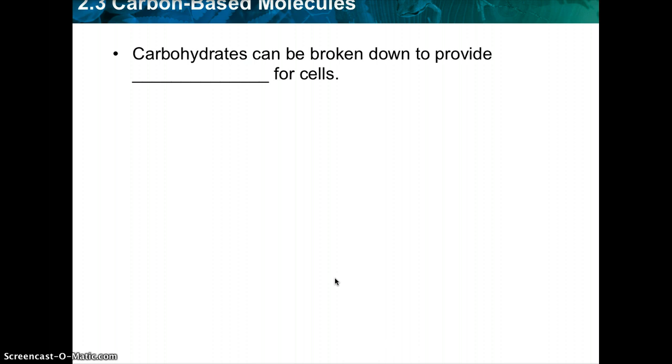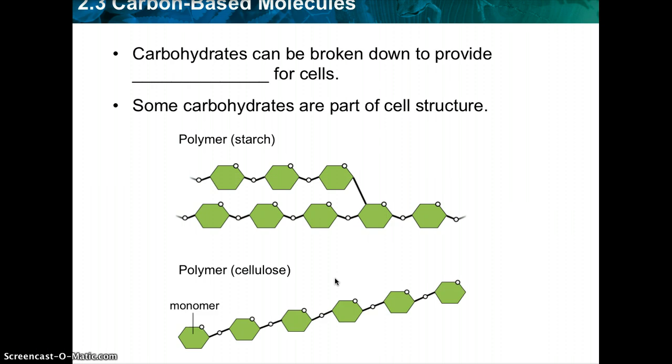So carbohydrates can be broken down to provide what for cells? All cells need what? Energy. So carbohydrates can be broken down to provide energy for cells. And some carbohydrates are part of the actual cell structure. Here we have a polymer as a starch, and we have a polymer as cellulose.